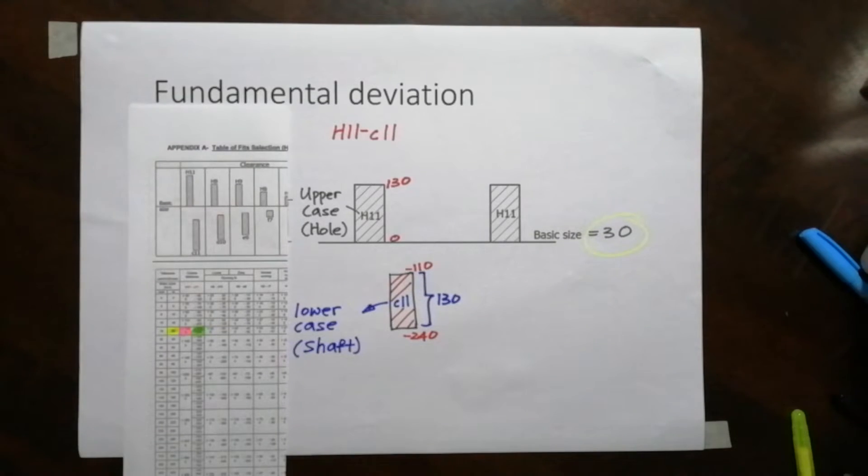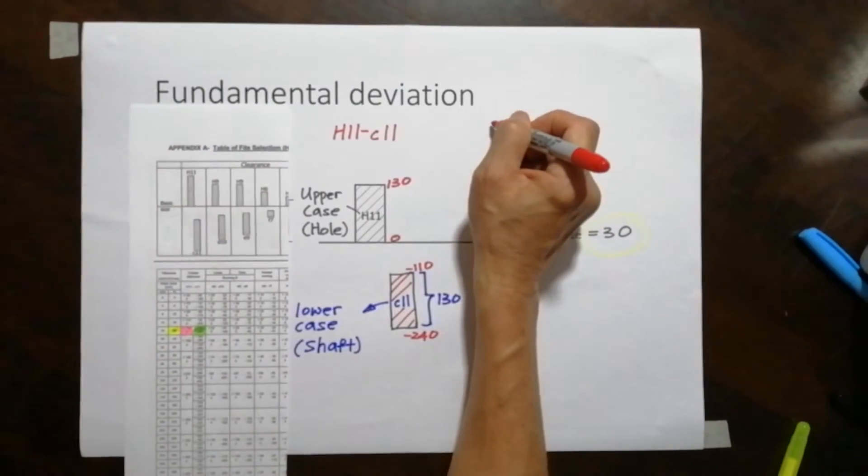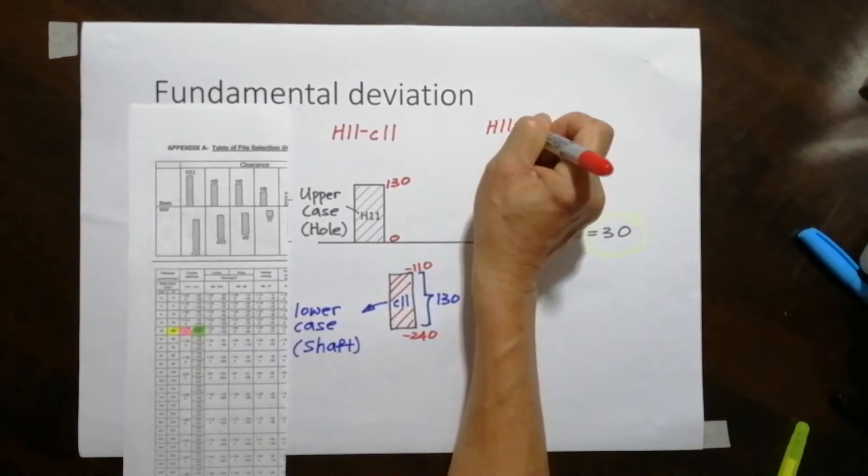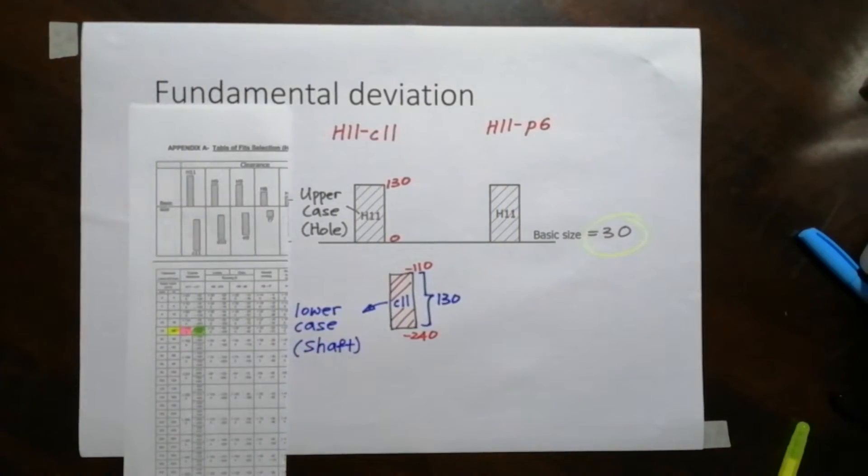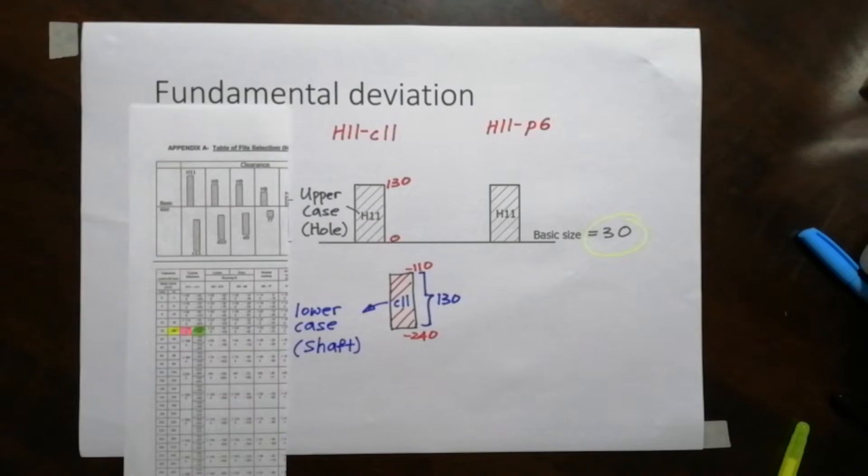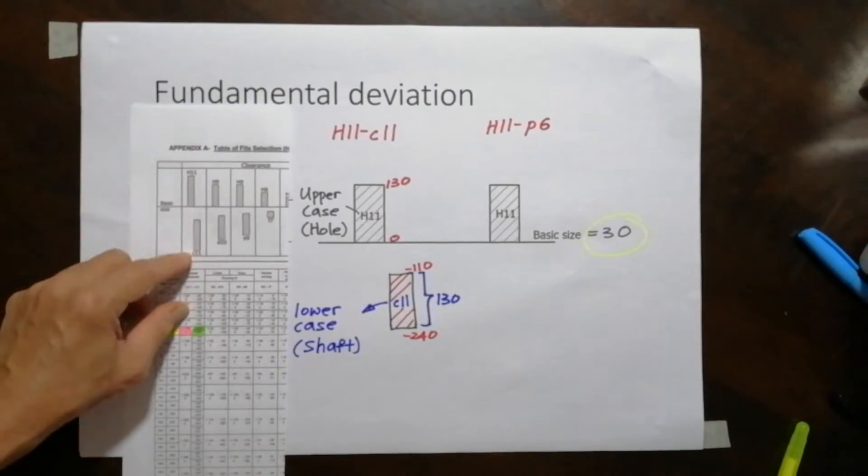Now let's try another fit. Let's say we take another size and call this still H11 for one size. But then this time, let me put it here. Let's say the size is H11-P6. So now where do I find P6? I look at the table here. H11 is here.